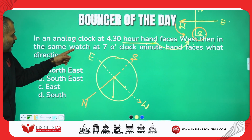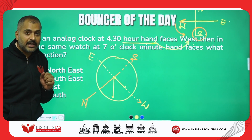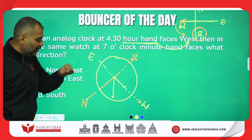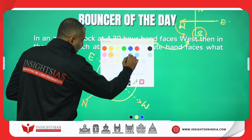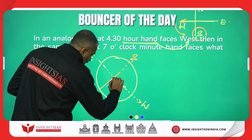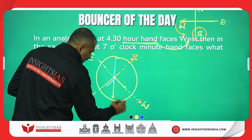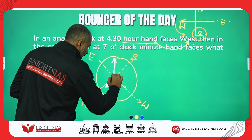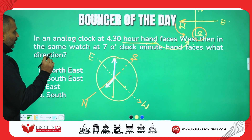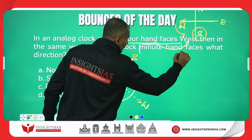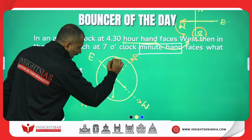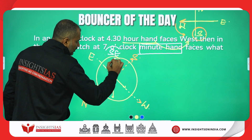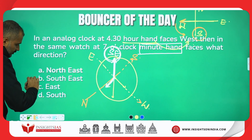Now, in the same watch at 7 o'clock, which direction does the minute hand face? In the same clock when the time is 7 o'clock — let us redraw 7 o'clock. At 7 o'clock, the minute hand faces a direction between south and east. Between south and east, the direction will be southeast. The answer is southeast.